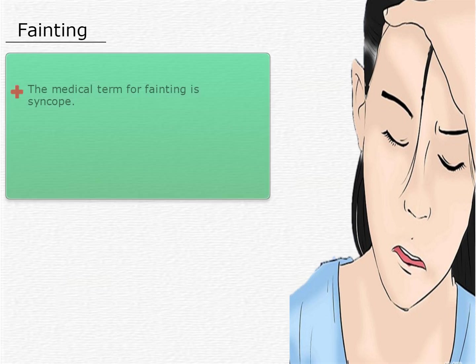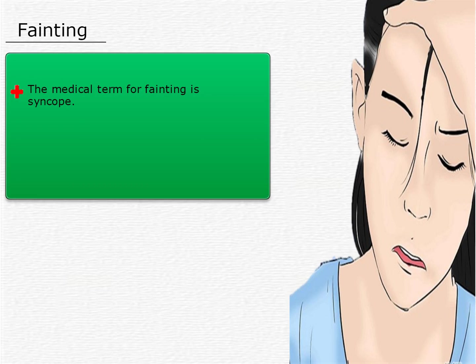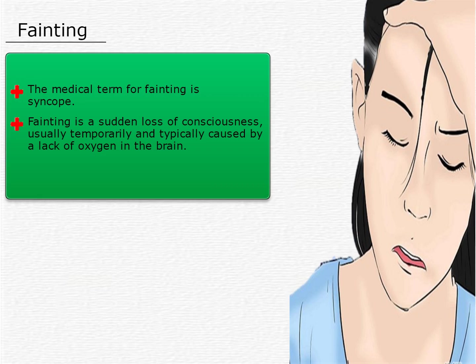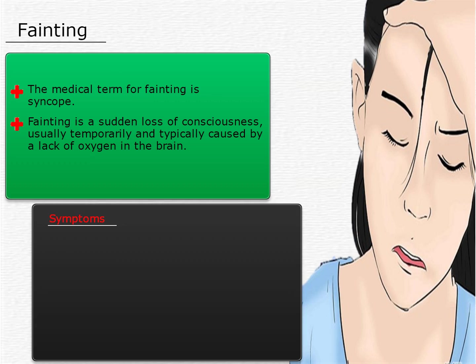The medical term for fainting is syncope. Fainting is a sudden loss of consciousness, usually temporarily, and typically caused by a lack of oxygen to the brain. The brain oxygen is deprived and has many possible causes, including hypotension or low blood pressure. Signs and symptoms that may precede a fainting event include a feeling of heaviness in the legs, blurred vision, confusion, nausea, and sweating.